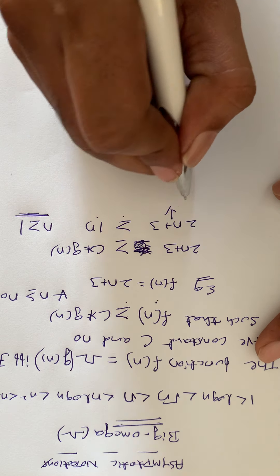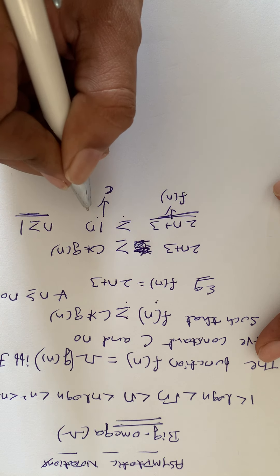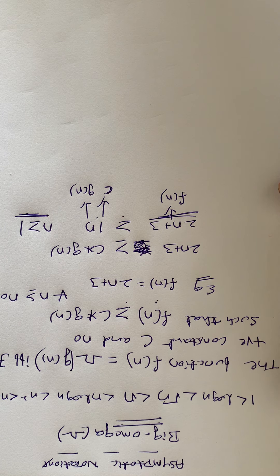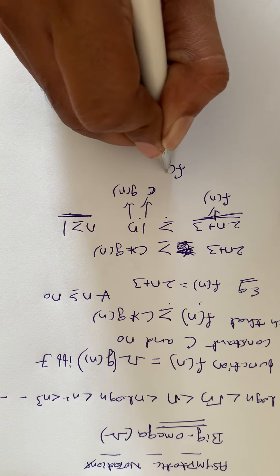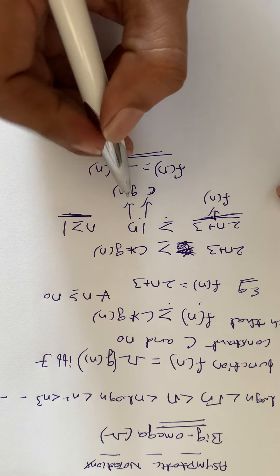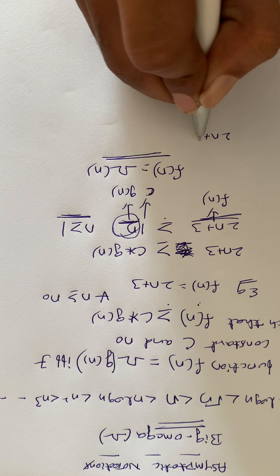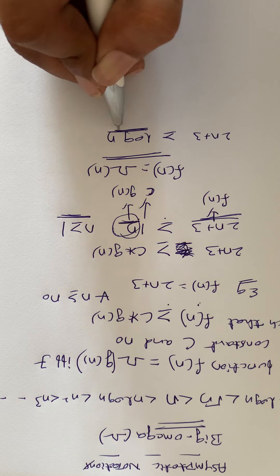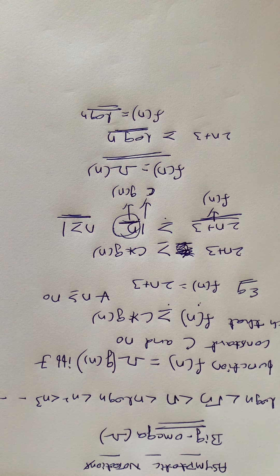So, 2n + 3 is f(n), 1 indicates c, and n indicates g(n). Finally, f(n) = Ω(n). Also, if we take 2n + 3 ≥ log n, this is also true. So f(n) = Ω(log n) as well. We can write this — it is also correct.